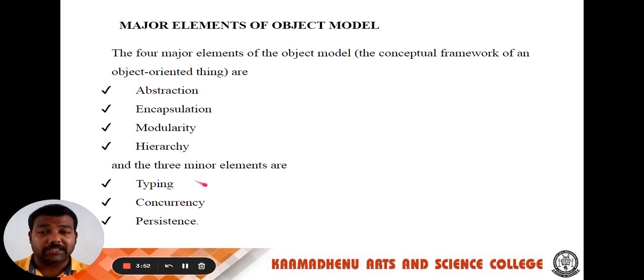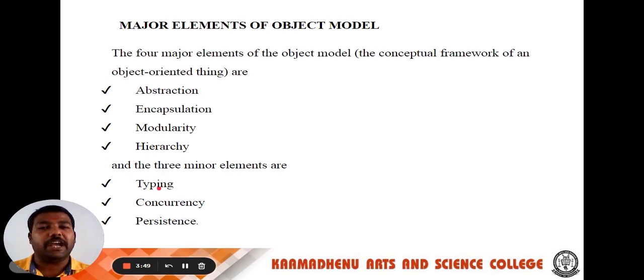The next three minor elements of the object model are: first, typing; second, concurrency; and third, persistence.